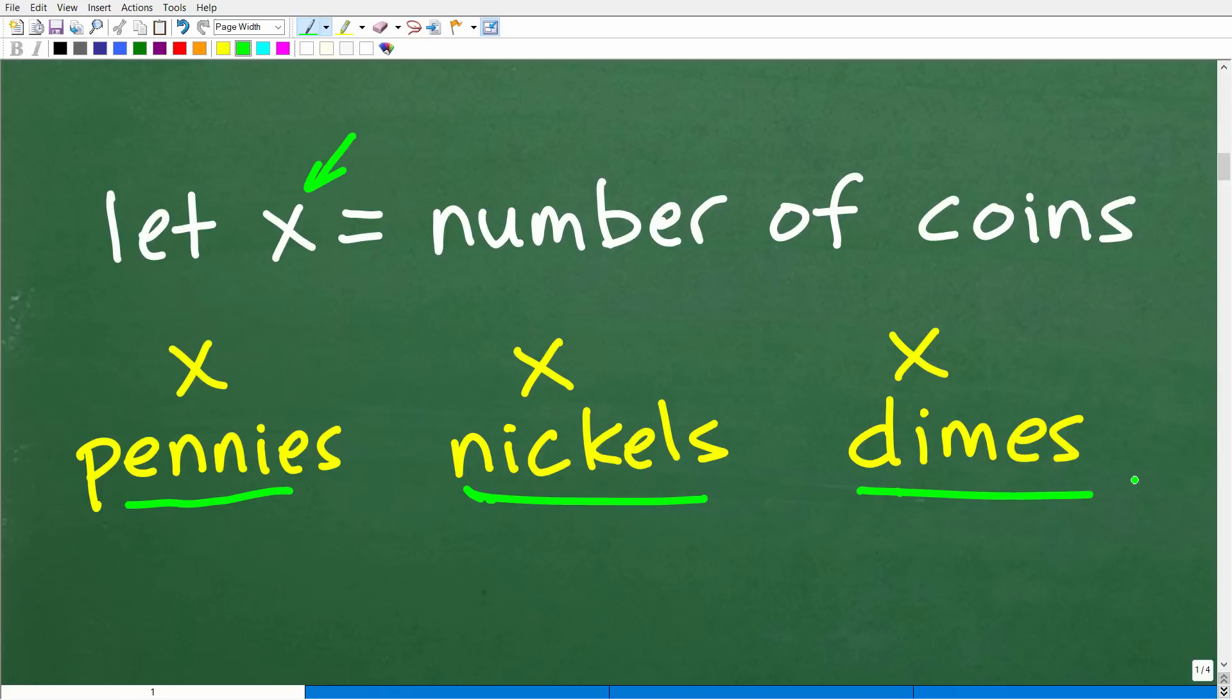But for me, I'm going to say to myself, okay, we're looking for the same amount of coins. Okay. It could be five coins, 10 coins. Of course, we know the answer is 15 coins, but whatever that amount of coins is, he's going to have an equal amount for pennies and he's going to have the same equal amount for nickels. And we're going to have the same equal amount for dimes. So we're going to let X equal the number of coins.